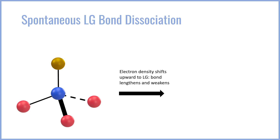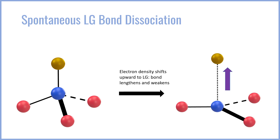What will happen is that the leaving group will begin to stretch out and pull the electron density away from the carbon such that it takes up both electrons, leaving the carbon electron deficient. This is known as a dissociative transition state because there is no new bond forming at the same time that the leaving group is leaving — it's just being pulled off by itself.